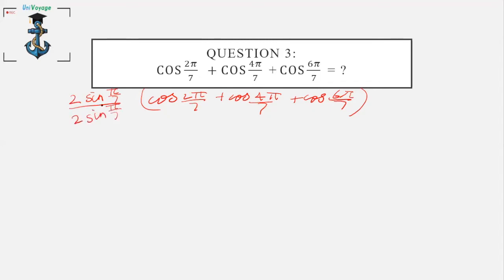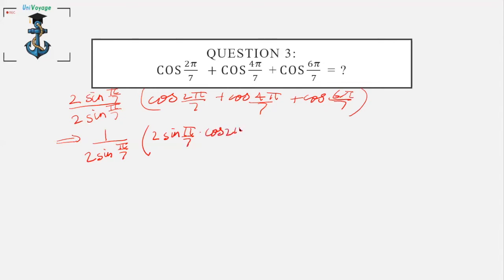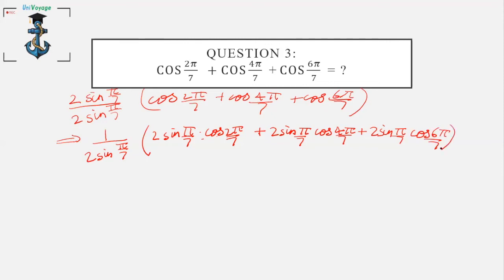I will take sin(π/7) inside the brackets in the numerator. So I get: 2sin(π/7)·cos(2π/7) + 2sin(π/7)·cos(4π/7) + 2sin(π/7)·cos(6π/7). We use the product-to-sum property of 2cosA·sinB, noting that A must be greater than B.